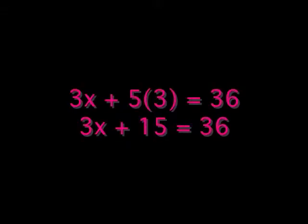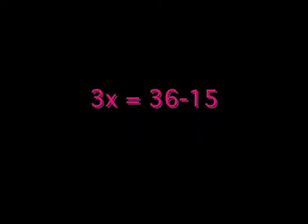5 times 3 is 15, and then 3x would equal 36 minus 15. That is 3x equals 21, or x is 7.